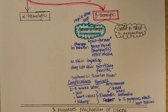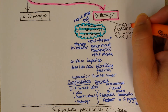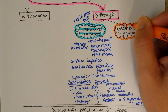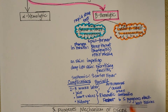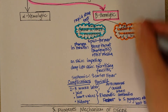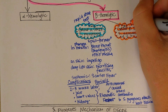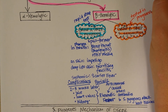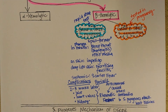Now let's look at group B strep. This is the type of strep that's tested when a woman is pregnant — they test her for group B strep. They do a culture for that rather than a rapid strep test.